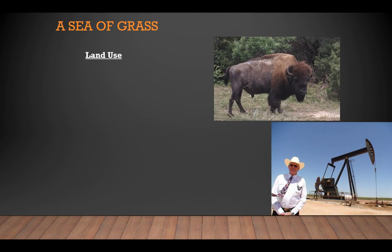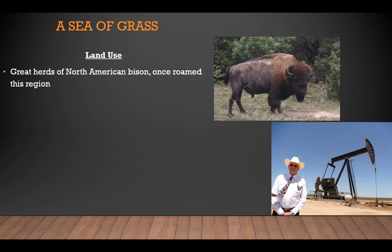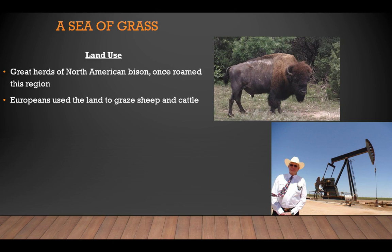Before Europeans ever arrived in Texas, the Great Plains region looked very different. Great herds of North American bison, or buffalo, once roamed the Great Plains, feeding on the deep-rooted wild grass that covered the region. Native American tribes followed the herds, hunting them for their meat and hides. Eventually that changed, as the Europeans — mainly the Spanish — arrived and took over the land. Once the Europeans took over, they used the land to graze first sheep, and then cattle.